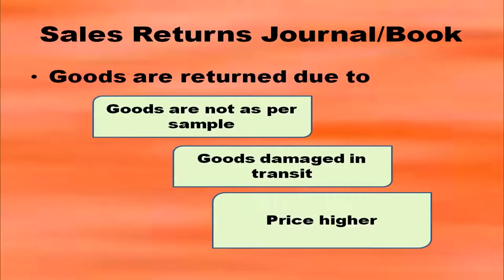We have studied the sales book. Now we also need to go through the sales returns book or sales returns journal. Goods returned by customers are recorded in the sales returns journal. Goods may not be up to the quality the customer decided, so sometimes goods are returned — because goods are not as per sample, goods may be damaged in transit, or the seller has charged a high price and customers are not satisfied.